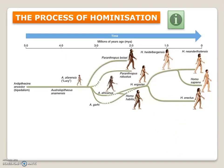Throughout this process of hominization, we find many different species — from the first ancestor all the way to us, Homo sapiens. We will find several species, most of them now extinct. The whole process started four million years ago and ended approximately 300,000 years ago.